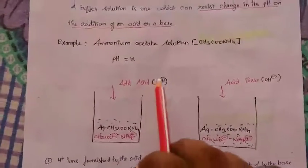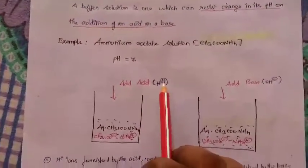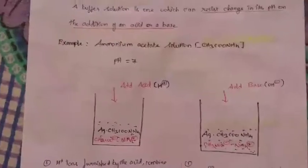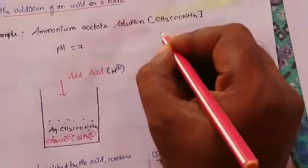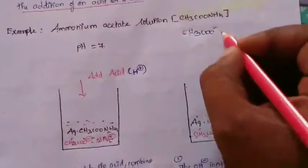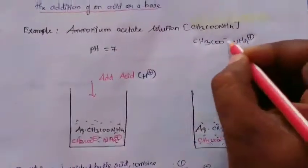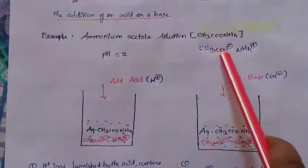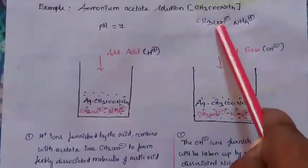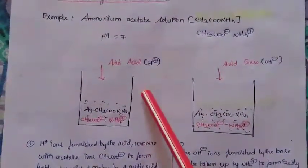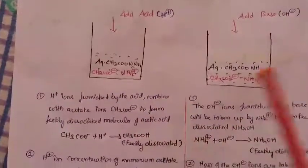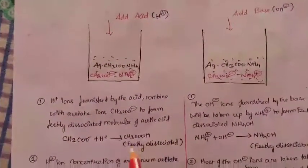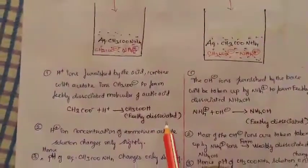So what happens? The H+ ions from the acid combine with acetate ions. In ammonium acetate, CH3COO⁻ NH4⁺ — the H+ ions combine with the acetate ion to form a weakly dissociated molecule of acetic acid. CH3COO⁻ + H⁺ combine to form acetic acid. This acetic acid is feebly dissociated, that is weakly dissociated.